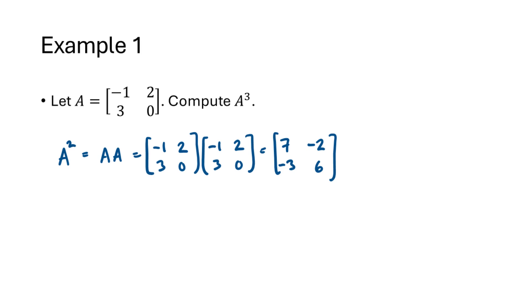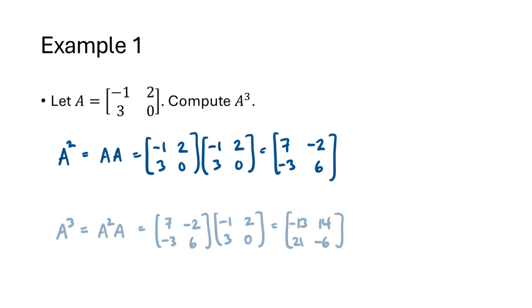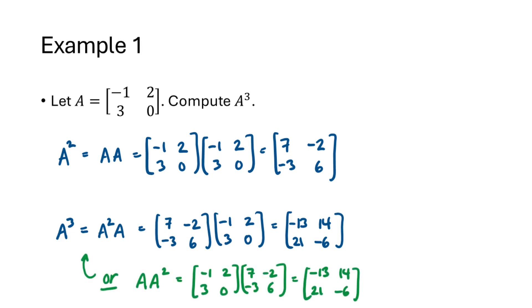What's A cubed? A cubed is just A squared times A. We've already computed A squared, so we multiply A squared by A and get [−13, 14; 21, −6]. Keep in mind we could have multiplied A by A squared in the other order and still get the same result. When we say matrix multiplication is not commutative, that doesn't mean it's never commutative — it just means it's not guaranteed. Sometimes multiplying two matrices in either order gives the same result, just not always.